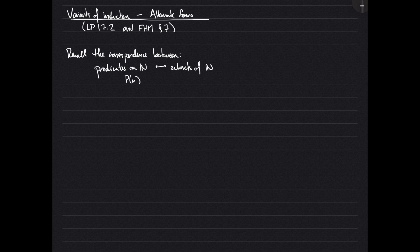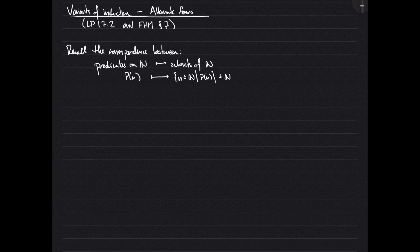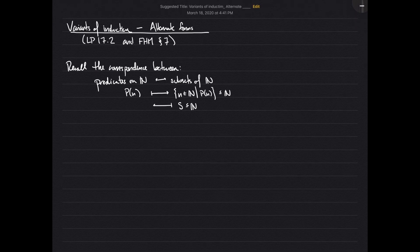This goes as follows. If we have a predicate and we want to produce a subset from it, we consider the subset of all natural numbers that satisfy our predicate — this is a subset of N. And to go the other way, given a subset of N, we get a predicate by saying the predicate is the statement 'n is in the subset.'